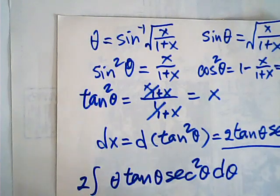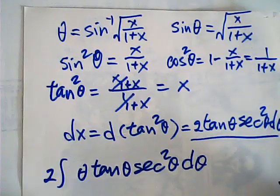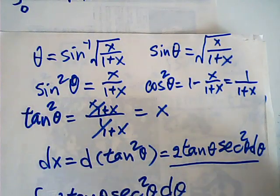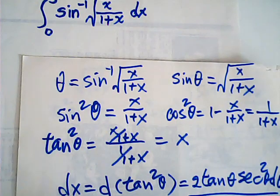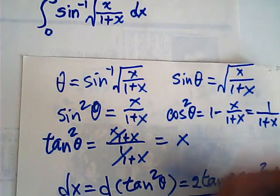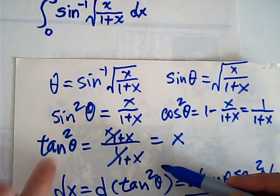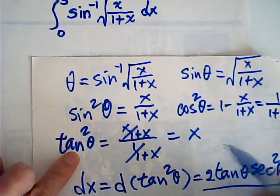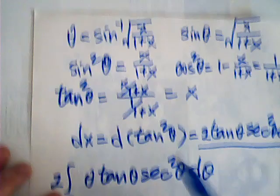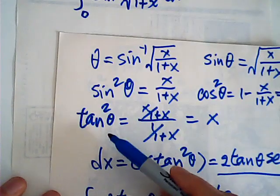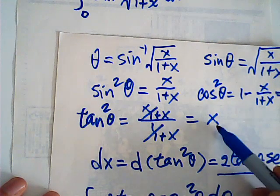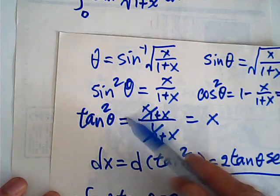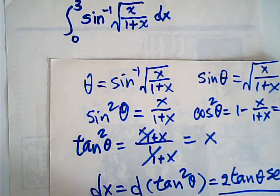Our integral becomes the integral of theta times 2 tangent theta secant squared theta d theta. Now I change the limits. How do we change the limits — from sine or tangent? I think tangent is easier. When x is 0, tangent squared theta is 0, so theta must be 0. When x is 3, tangent squared theta is 3, so tangent theta is root 3, and therefore theta equals pi over 3.